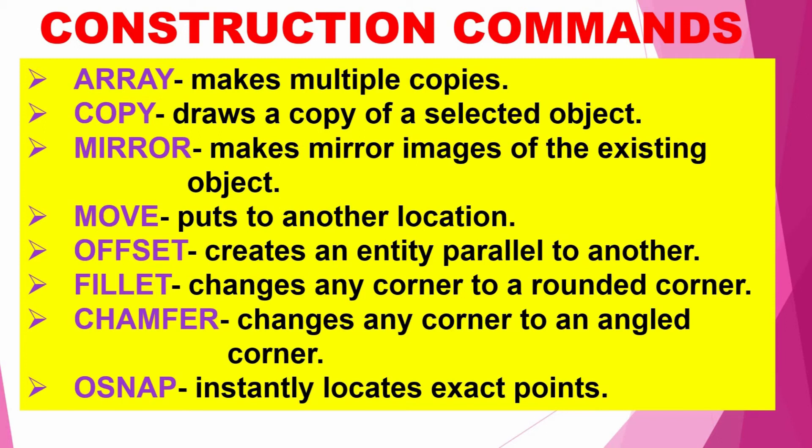Fillet changes any corner to a rounded corner. Chamfer changes any corner to an angled corner. O-snap instantly locates exact points relative to existing objects or points. Object snap modes include: Endpoints, Midpoints, Center, Quadrant, Intersection, Insertion, Perpendicular, Tangent, Nearest, Node, and None.